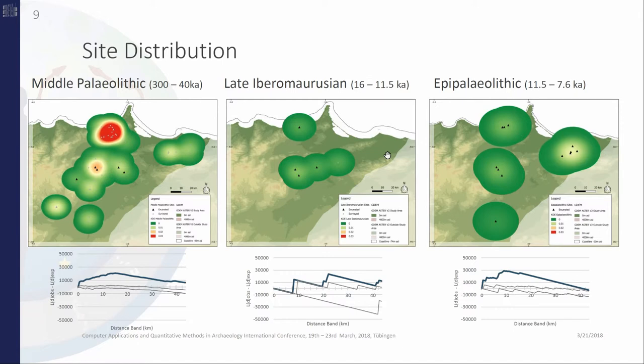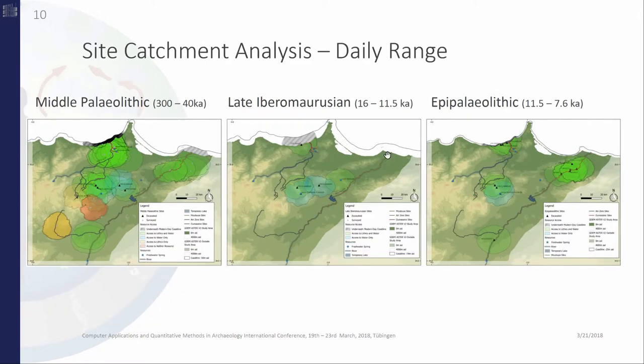Now the site catchment analyses. This first one tells me about settlement orientation in relation to resources, what I called economic potential, and allows me to predict the spectrum of procurement-related activities undertaken at the site. To do this, I modeled ranges around each site defined by four hours walking time. This is my estimation of the area which a person can travel, procure resources, and return before nightfall.